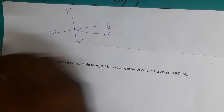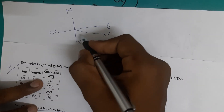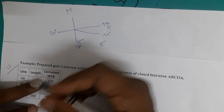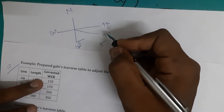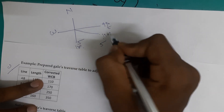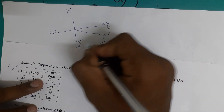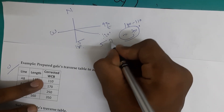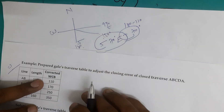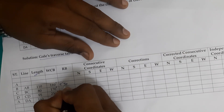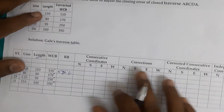For a bearing in the second quadrant, the reduced bearing is calculated as 180° minus the WCB. The reduced bearing is always less than 90°. So: 180° − 110° = 70°. The reduced bearing is therefore S 70° E — that is, South 70° towards East.